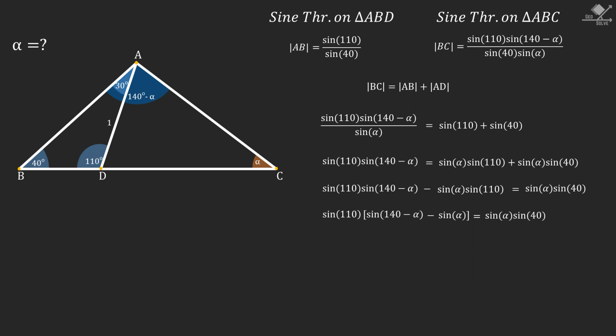Now remember that sine of A plus minus B is equal to sine A times cosine B plus minus sine B times cosine A. And we can use this identity in our equation for the green shaded term. So we will have this lengthy equation.